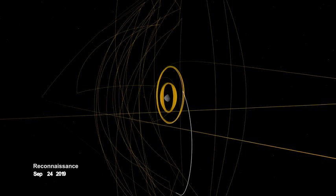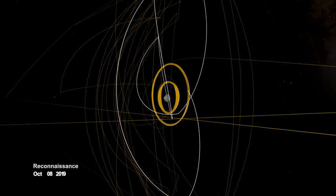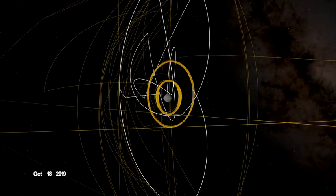In September, it began reconnaissance on four candidate sample collection sites, potential locations on Bennu to touch down and collect a sample later in the mission.